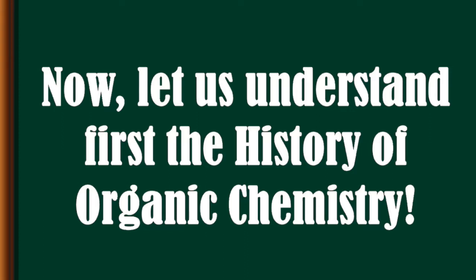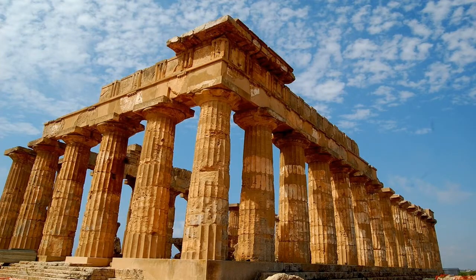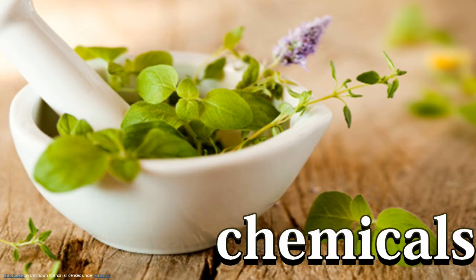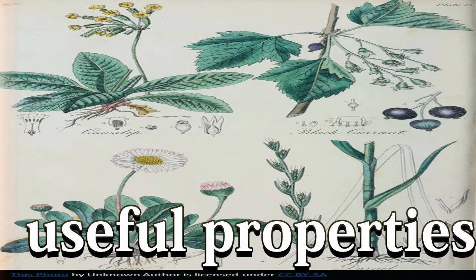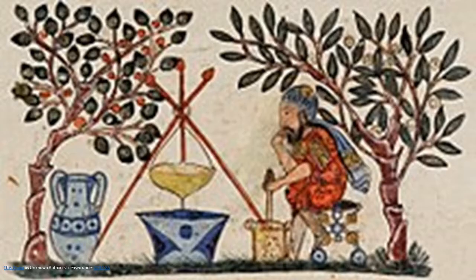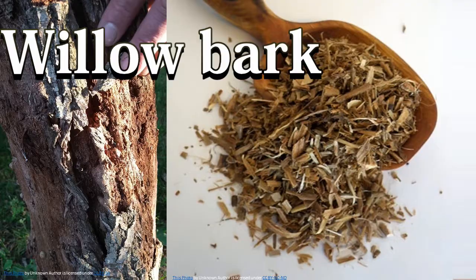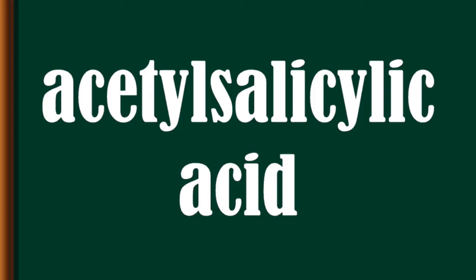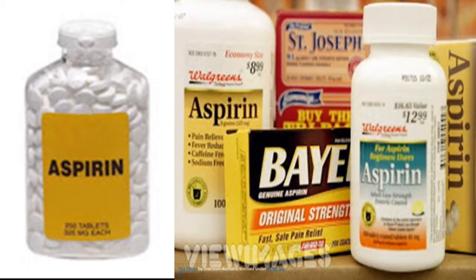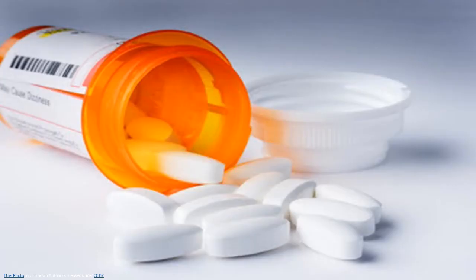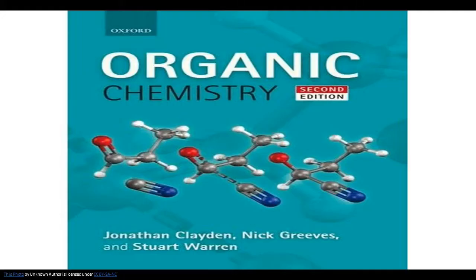Let us understand first the history of organic chemistry. The history of organic chemistry can be traced back to ancient times when medicine men extracted chemicals from plants and animals to treat members of their tribes. They simply kept records of the useful properties and uses of things but did not label their work as organic chemistry. An example is the discovery of willow bark as a painkiller, which is now known to contain acetylsalicylic acid, the ingredient found in aspirin.